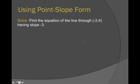Let's find the equation of the line through the point (-2, 4) having slope -3. So I have x₁ is -2, y₁ is 4, and the slope m is -3.